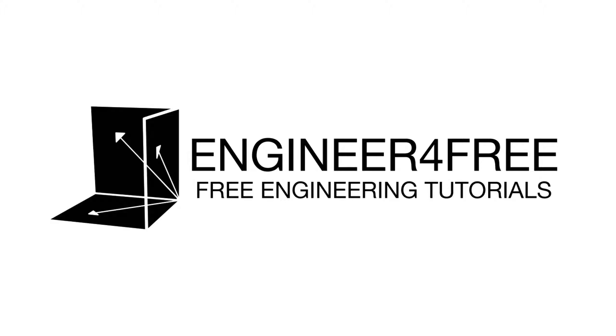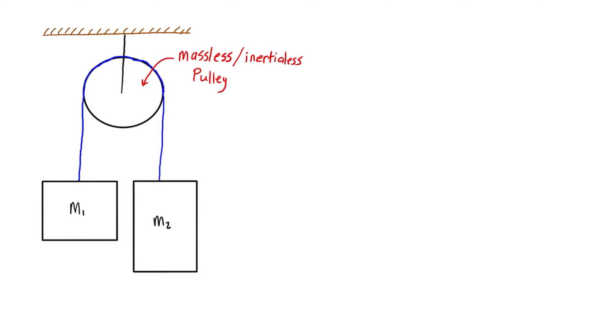Welcome back. In this video we're going over how to solve kinetic pulley problems. The setup we're looking at is referred to as an Atwood machine, where we have one pulley supporting two different masses.